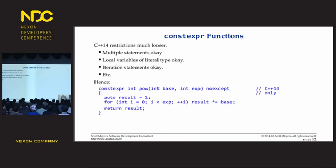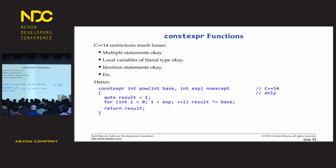In C++14, there are far fewer restrictions. You can use multiple statements, local variables of literal types, and iteration. The C++14 version of the pow constexpr function looks just like a regular function with the word constexpr put in front of it — it declares a local variable called result, has a for loop, and modifies result inside the function. This entire function, if need be, will execute during compilation in C++14.